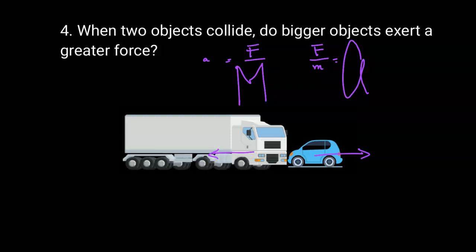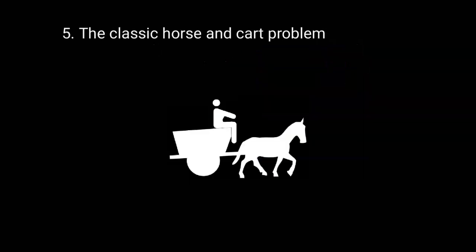Here is the classic horse and cart problem. Newton's third law tells us that for every action force there is an equal and opposite reaction force, meaning the force of the horse pulling on the cart equals the force of the cart pulling on the horse. So the question is: how can this horse-cart system ever move? The misconception is thinking that these forces are acting on the same object — but they are acting on different objects.